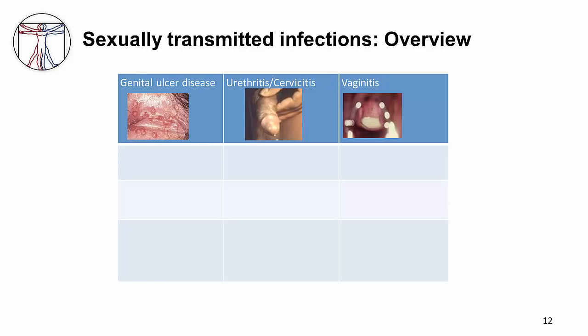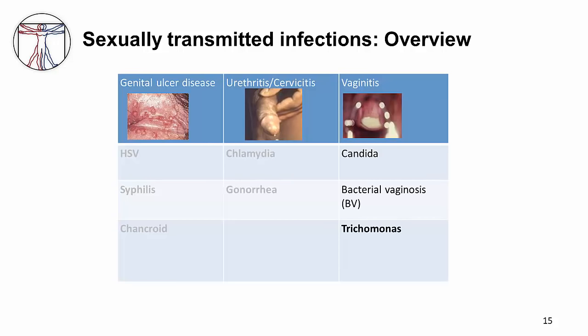When I think about STIs, I think about classifying them into three boxes: genital ulcer disease, urethritis or cervicitis, and vaginitis. The main causes of genital ulcer disease are herpes simplex virus 1 and herpes simplex virus 2, as well as syphilis caused by T. pallidum, and chancroid as a distant third, caused by H. ducreyi. The two main causes of urethritis and cervicitis are Chlamydia trachomatis and gonococcus. Finally, there are three main causes of vaginitis — only one of these is a sexually transmitted infection, but we include all three because the workup is the same.